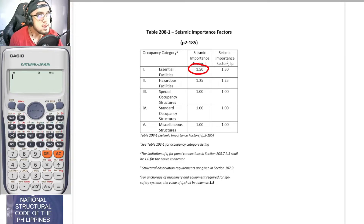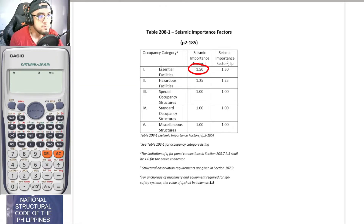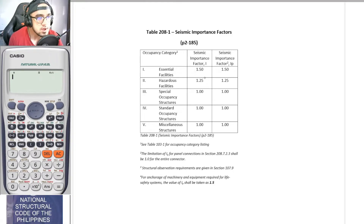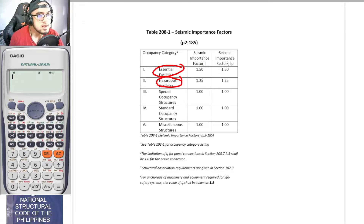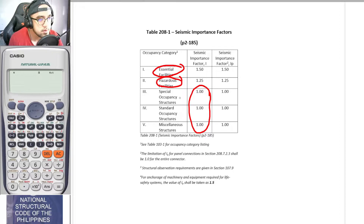If the building houses toxic wastes or is a hazardous facility — meaning it cannot be destroyed because of the hazard it contains — the seismic importance factor is 1.25. If the building is neither an essential facility nor a hazardous facility, the seismic importance factor is 1.0, whether it is a special occupancy structure, a standard occupancy structure, or a miscellaneous structure.